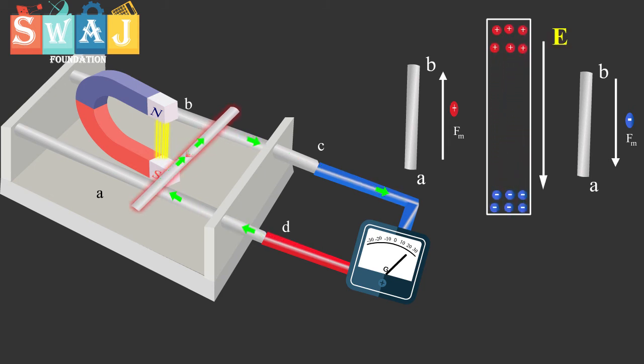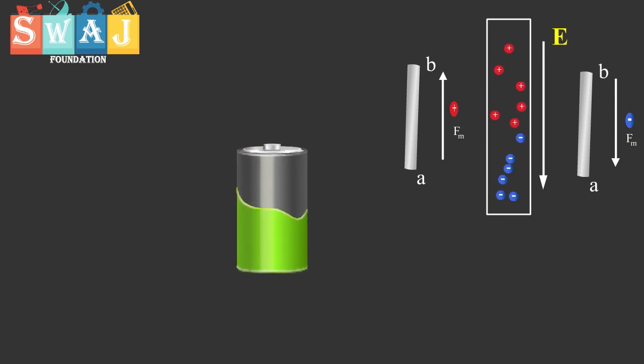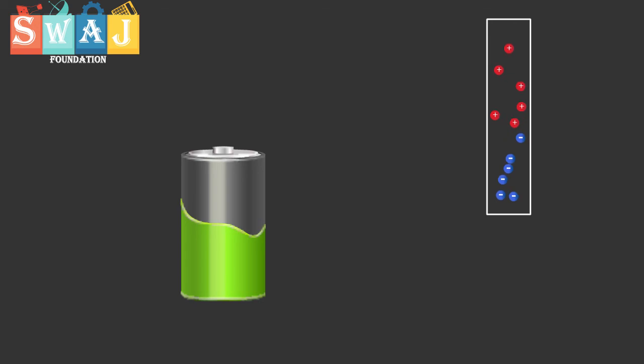This redistribution of charges sets up an electrostatic field E directed from B to A. Now our moving rod is behaving like a cell. I hope now you have complete understanding about Motional EMF through this animation.